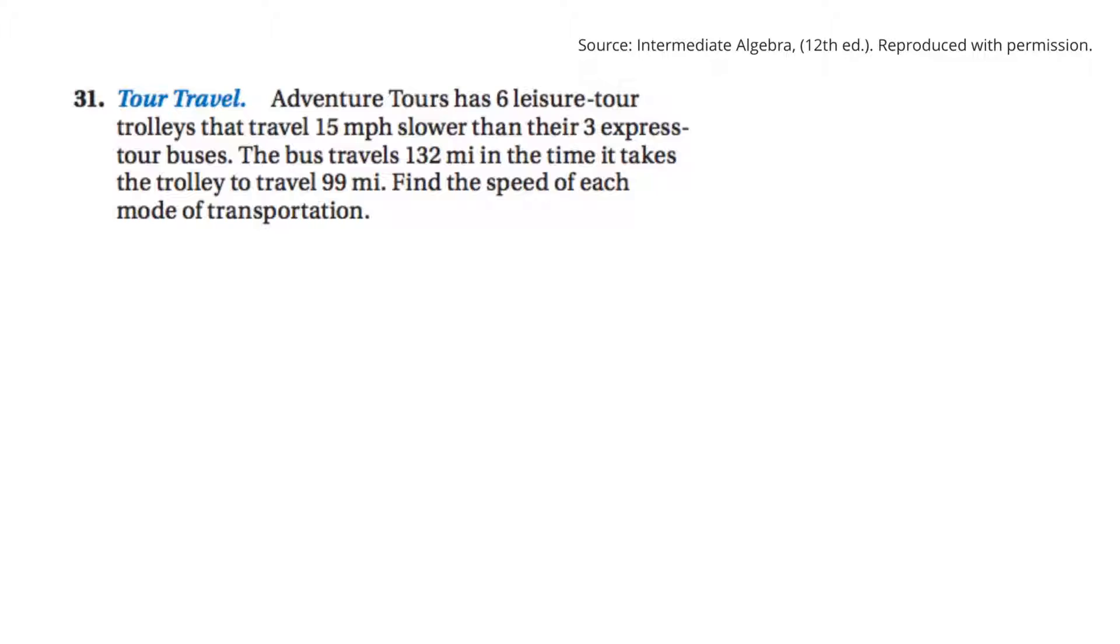Last question. Adventure tours has six leisure tour trolleys that travel 15 miles per hour slower than the three express tour buses. The bus travels 102 miles in the time it takes the trolley to travel 99 miles. So time is the same. So the question says, how fast do each of them go?